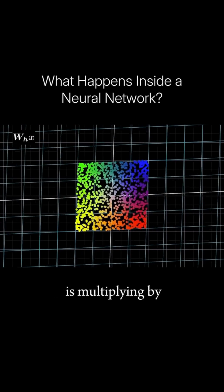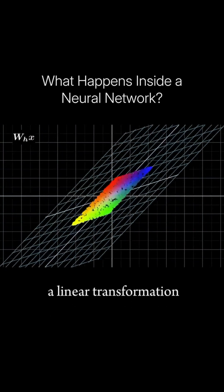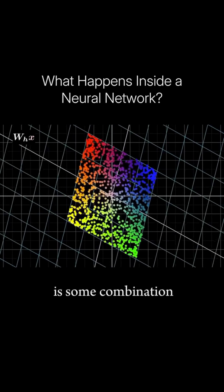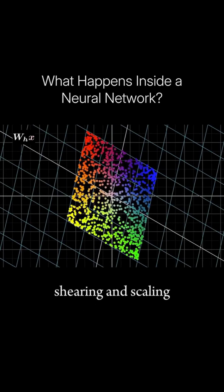The first transformation is multiplying by the weight matrix, which is a linear transformation. Notice how this is some combination of rotation, shearing, and scaling.